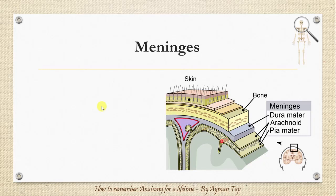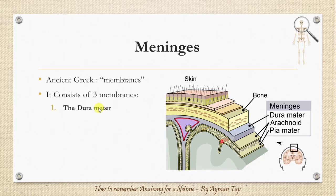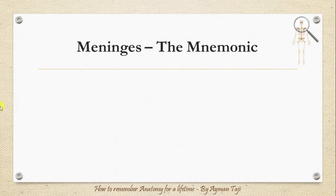And finally, the meninges. Meninges is the plural of the word 'menix', which means in ancient Greek a membrane. They are actually three membranes that envelop the brain and spinal cord. They are the duramater, the arachnoid membrane, and the piamater.